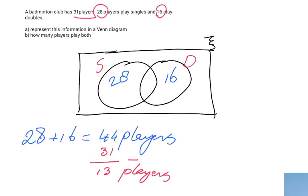And that is the amount that you have counted double. So 13 players I have counted double. And why did I count them double? Because they belong in that middle part. So let me do that in red.